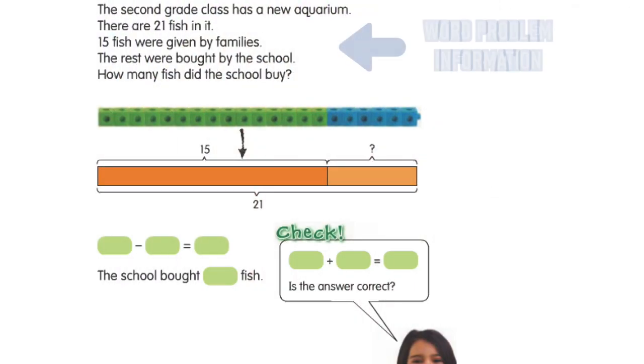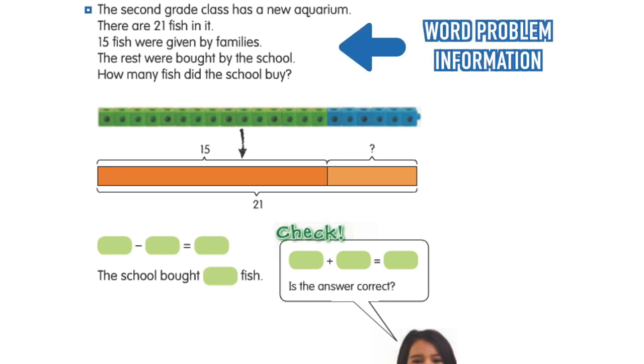Let me show you an example of what you might see in possibly a second grade classroom. In this word problem we have a second grade class with a new aquarium and there are 21 fish in it. The fish were given by families; the rest were bought by the school. How many did the school buy?